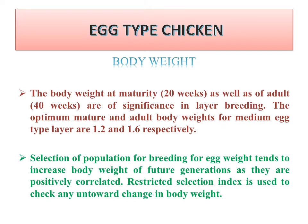Body weight at maturity (20 weeks) and at adult age (40 weeks) are significant in layer breeding. The optimum mature and adult body weight for medium-type egg layers is 1.2 kg and 1.6 kg respectively. Selection for egg weight tends to increase the body weight of future generations as they are positively correlated. A restricted selection index is used to prevent any untoward change in body weight.